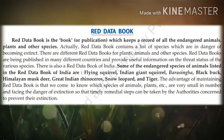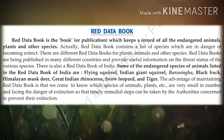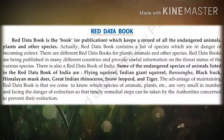The Red Data Book is the publication which keeps a record of all the endangered animals, plants, and other species. There is also a Red Data Book of India. Some of the endangered species of animals listed in the Red Data Book of India are flying squirrel, Indian giant squirrel, Barasingha, black buck, Himalayan musk deer, great Indian rhinoceros, snow leopard, and tiger.